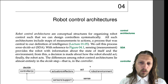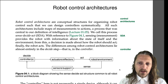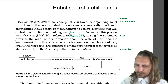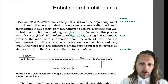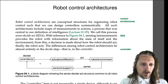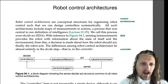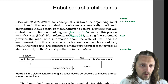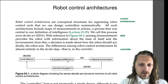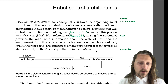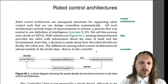With reference to Figure 4.1 right here: sensing, or measurement, provides the robot with information about the state of itself and of the environment. The robot environment is sensed using sensors and sensor support devices, being fed back to the controller, which decides — a decision is made about how the robot should act. Then actuators and effectors are used to act on the robot and environment. The differences among robot control architectures lie almost entirely in the decide step, that is, in the controller.